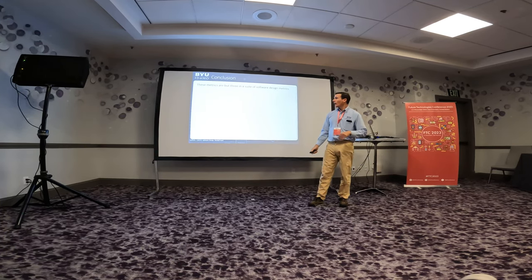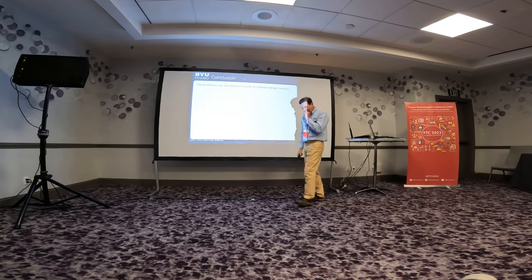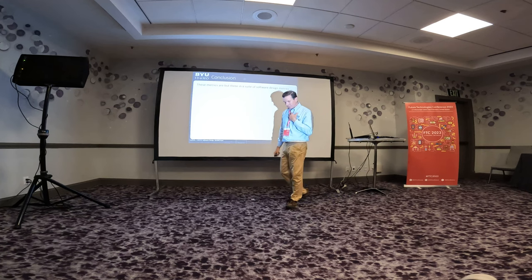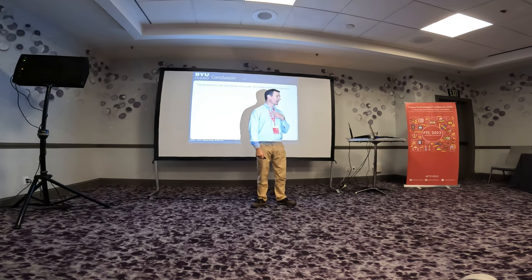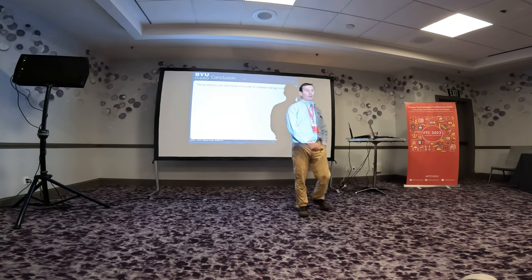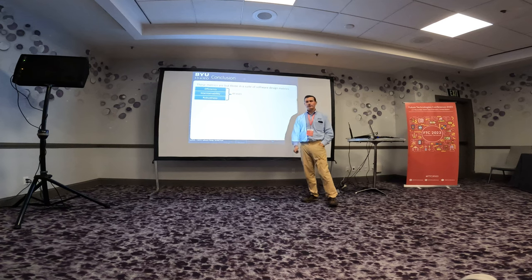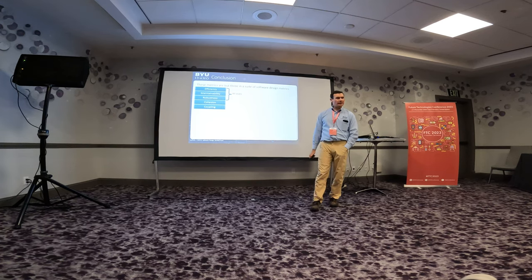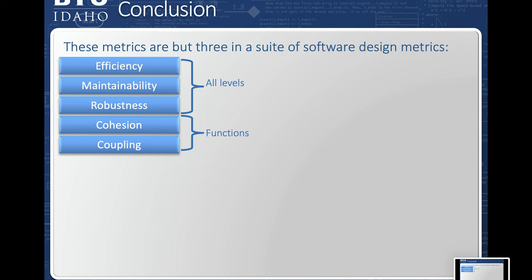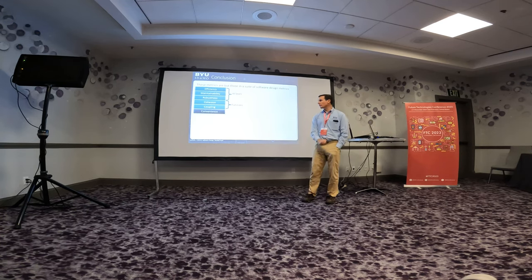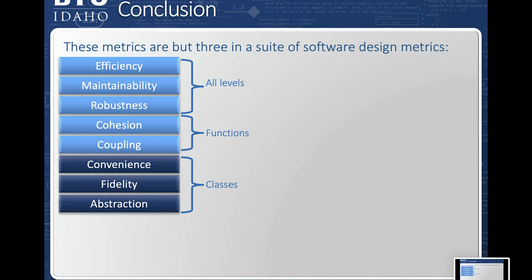Is this enough to discern design quality? Absolutely not. We have algorithmic efficiency, maintainability, and robustness — all at all levels of design. We have cohesion and coupling for function quality design, and now these new metrics of convenience, fidelity, and abstraction for class design. What's the quality when you assemble classes together? That's inheritance, composition, aggregation, and association — where alignment, adaptability, and redundancy come in.